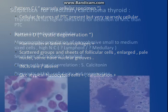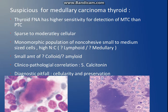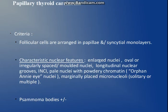We can also give suspicious for medullary carcinoma thyroid — for example, if we find a monomorphic population of small to medium cells but are not sure whether the population is lymphoid or medullary. Sometimes we find a small amount of colloid but think it is amyloid. In such cases we give suspicion, and clinical-pathological correlation with serum calcitonin level should be done. Likewise, suspicion can be given for lymphoma and other malignancies.